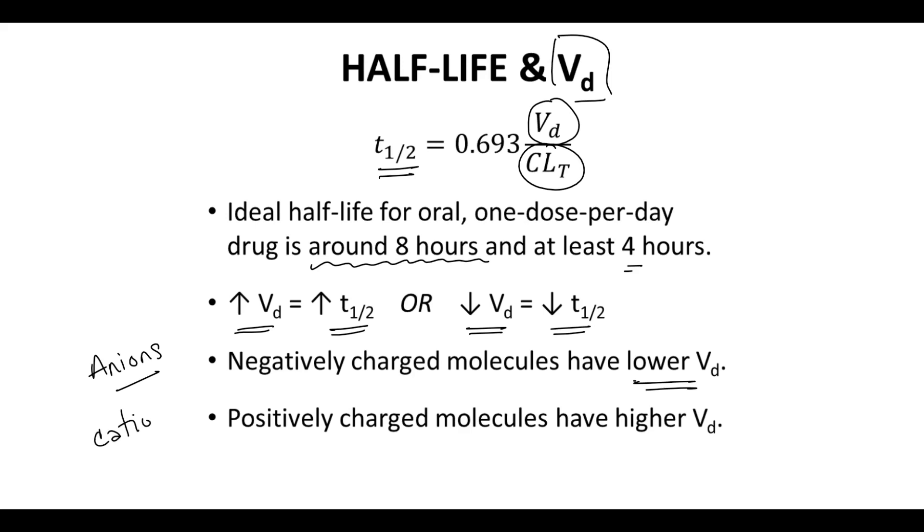Cationic drugs have a positive charge. The positive charge tends to draw the drug to the anionic phosphate groups found on the surface of cell membranes. Cationic drugs, therefore, are drawn out of the plasma to cell surfaces and have a higher volume of distribution. Therefore, addition of a positive charge to a molecule can increase VD.